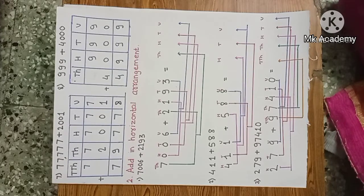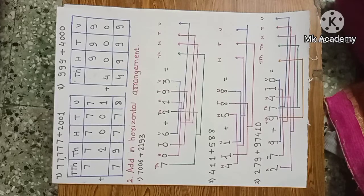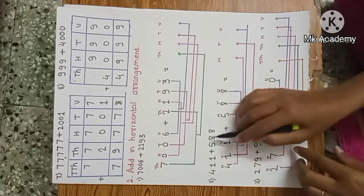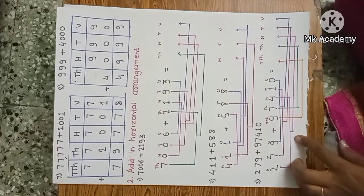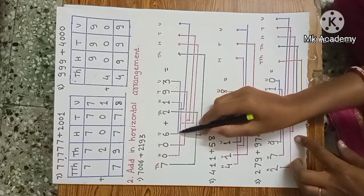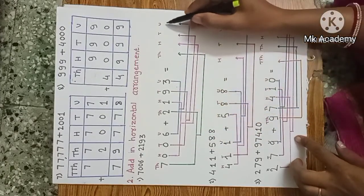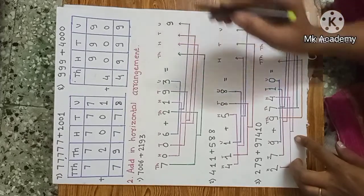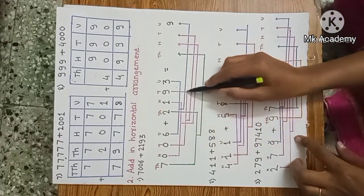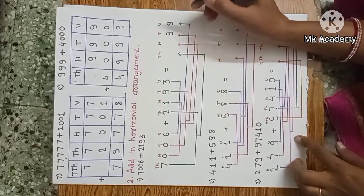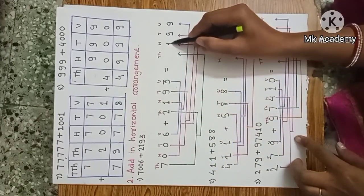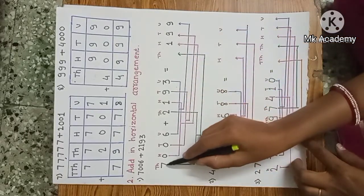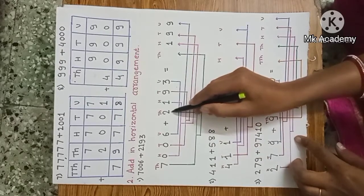First example: 7,006 plus 2,193. This is a horizontal arrangement. We add first units: 6 units plus 3 units is 9 units. Tens: 0 tens plus 9 tens is 9 tens. Hundreds: 0 hundred plus 1 hundred is 1 hundred. Thousands: 7,000 plus 2,000 is 9,000. The answer is 9,199.